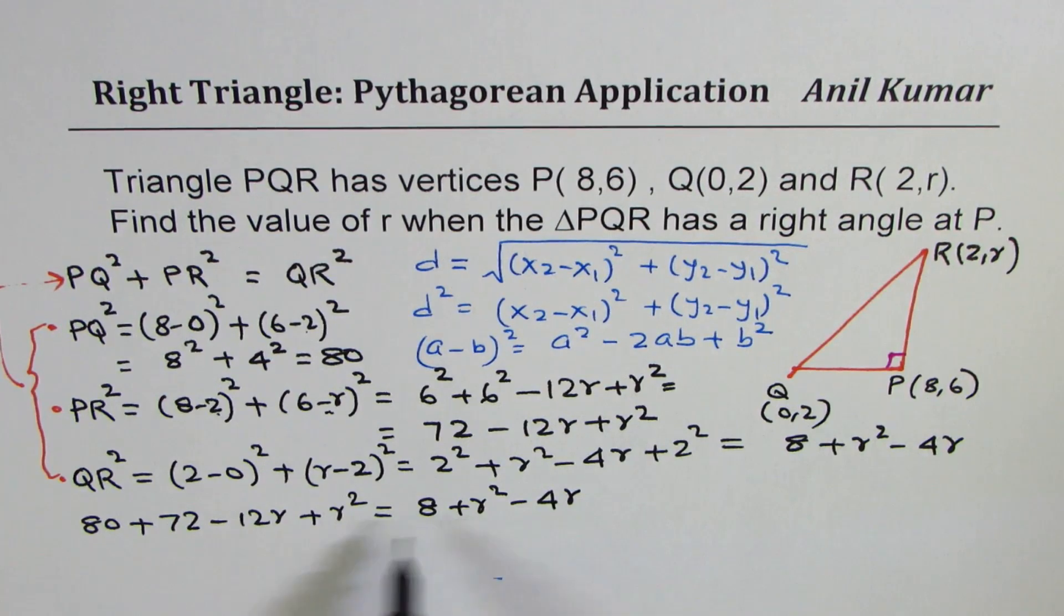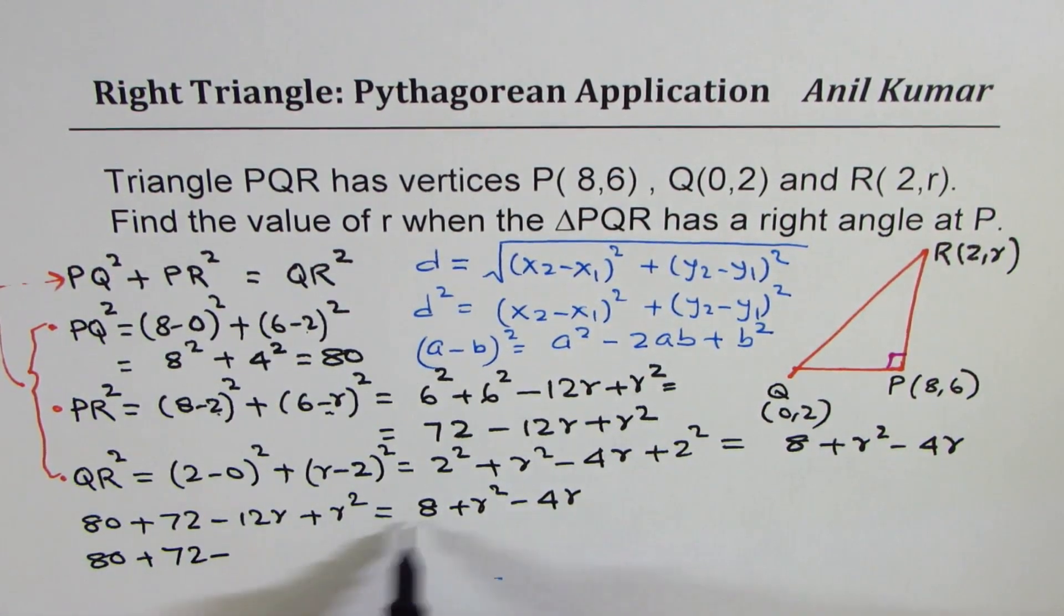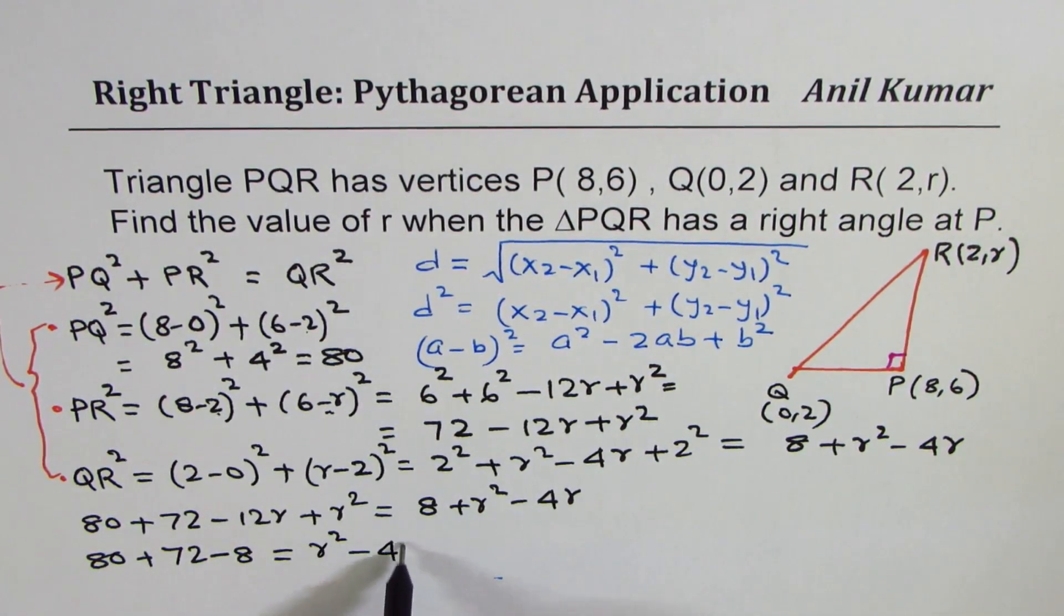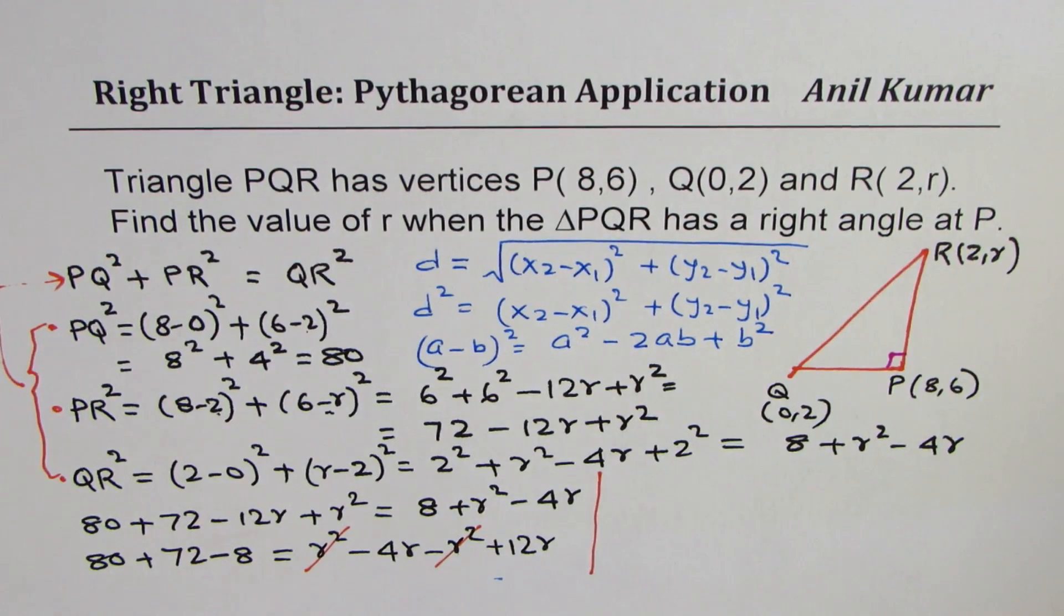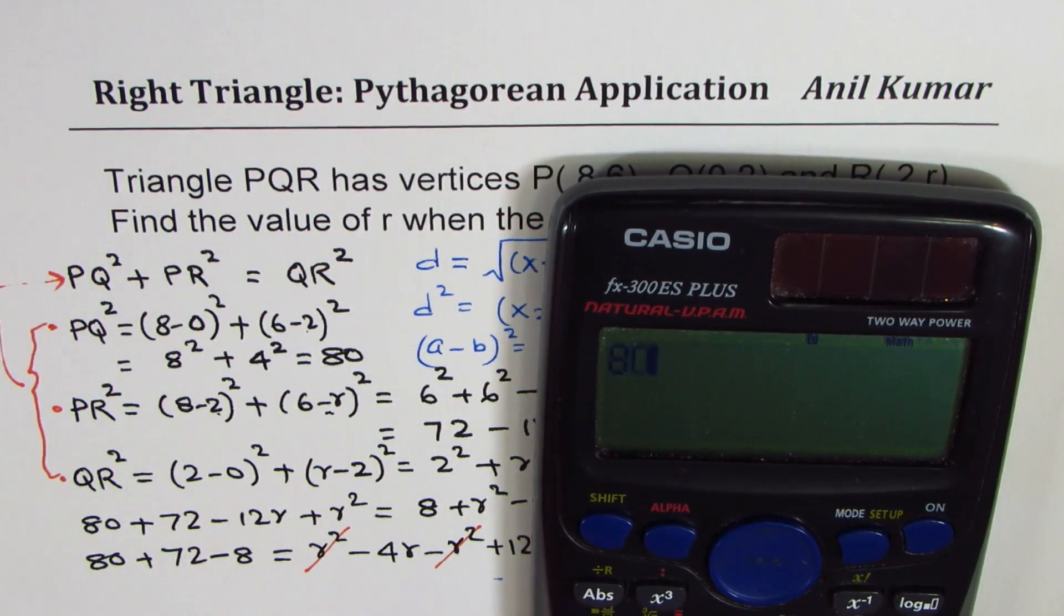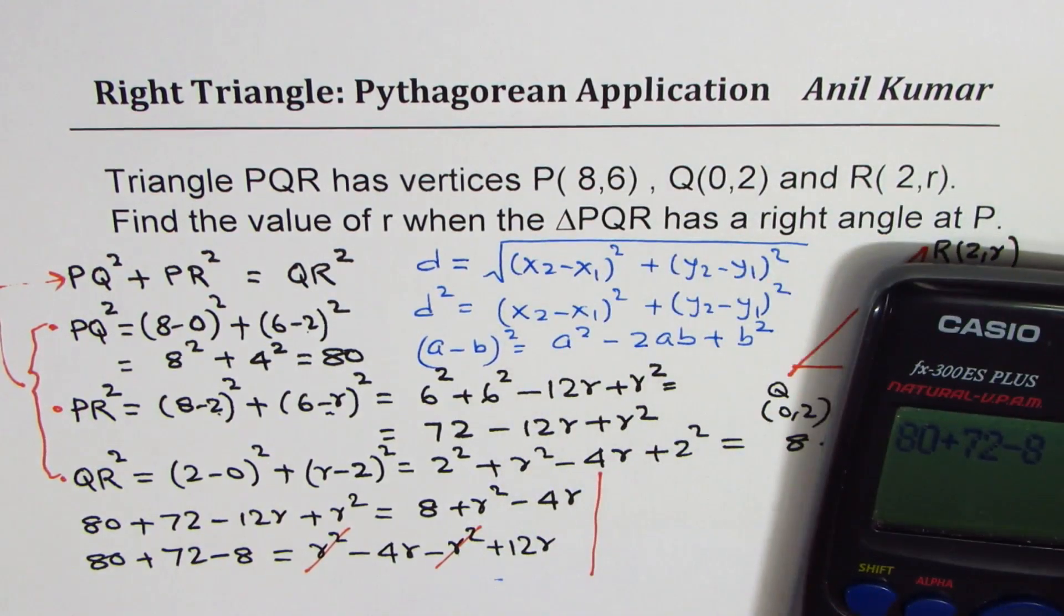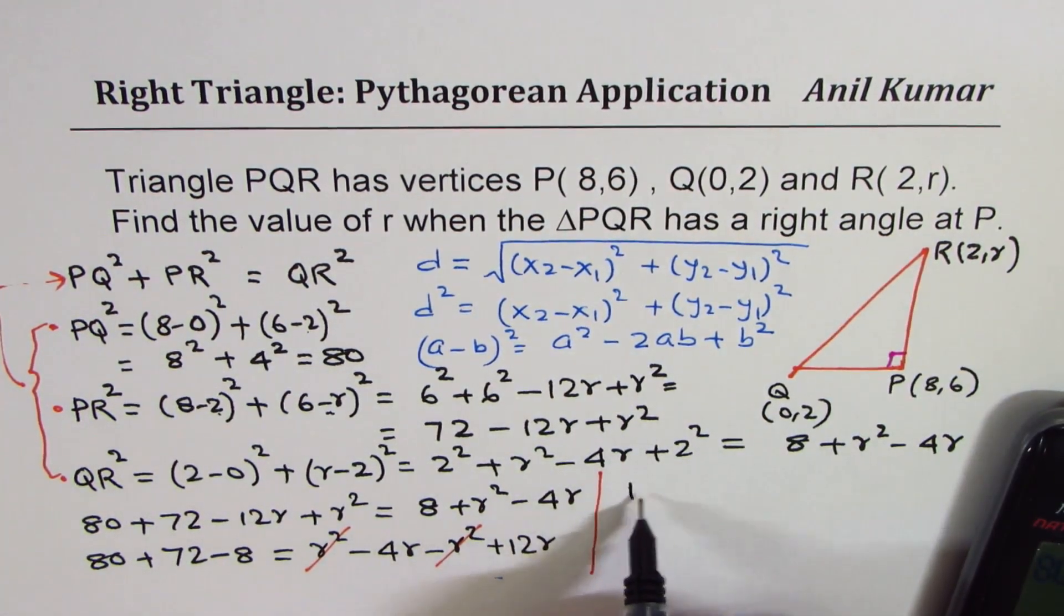Now we can bring the variables on one side and constants on the other side. So we get 80 + 72 - 8 equals to r² - 4r - r² + 12r. So let's solve this equation. r² minus r² is 0. So we have a linear equation. So we can write this as, let's calculate the left side, which is 80 + 72 - 8 equals to 144. So we have 144.